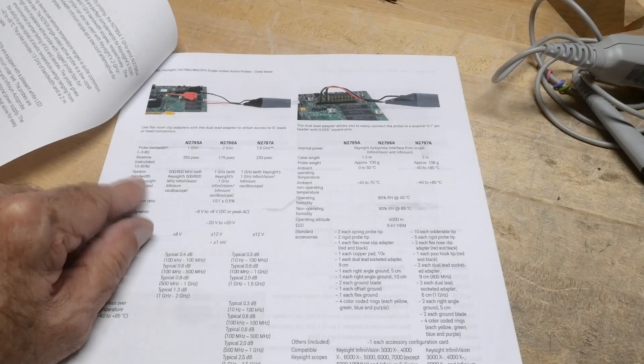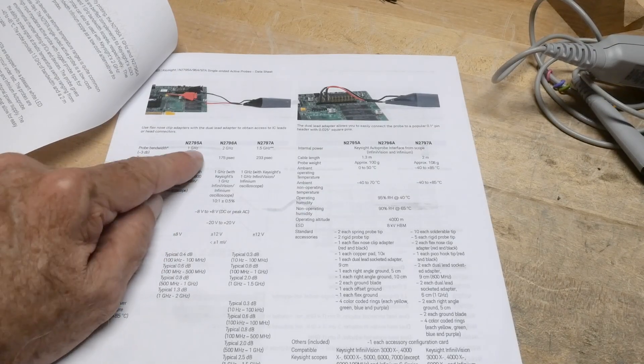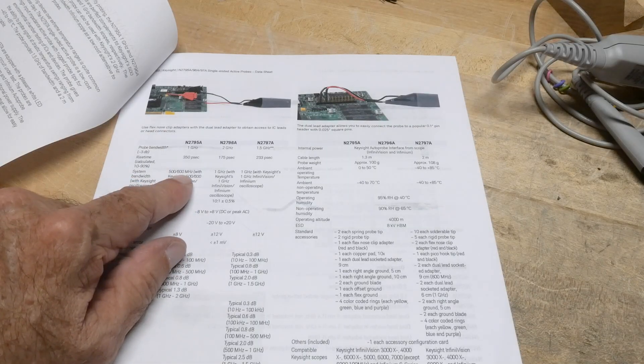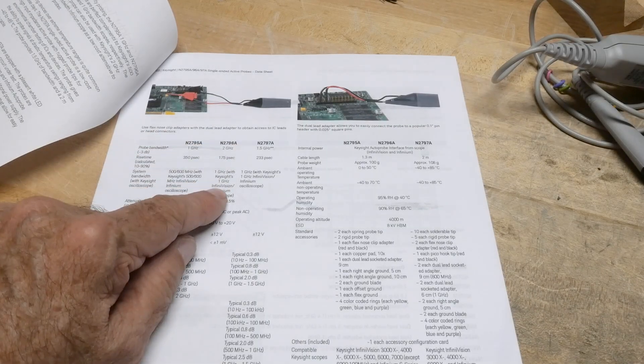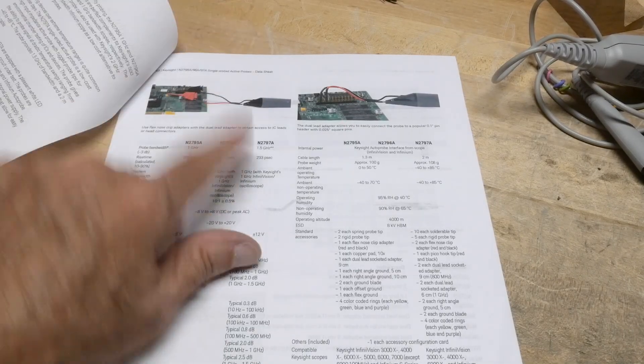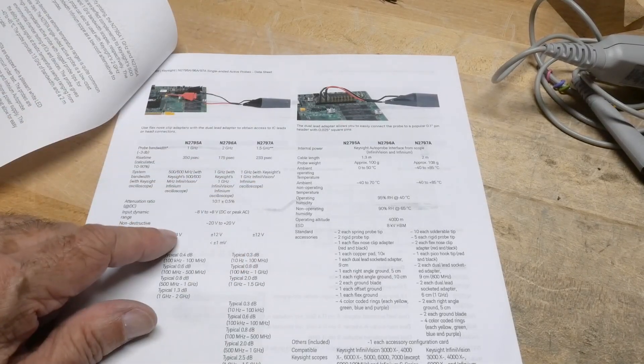They talk about system bandwidth. Although the probe bandwidth may be a gigahertz, if you plug it into a 600 megahertz scope, it's only going to get 600. Otherwise, if you take a 2 gigahertz one, it'll only give you 1 gigahertz if you plug it into my scope.